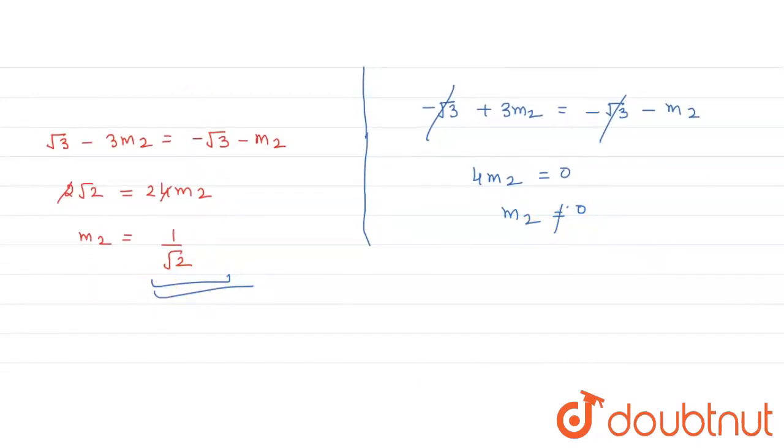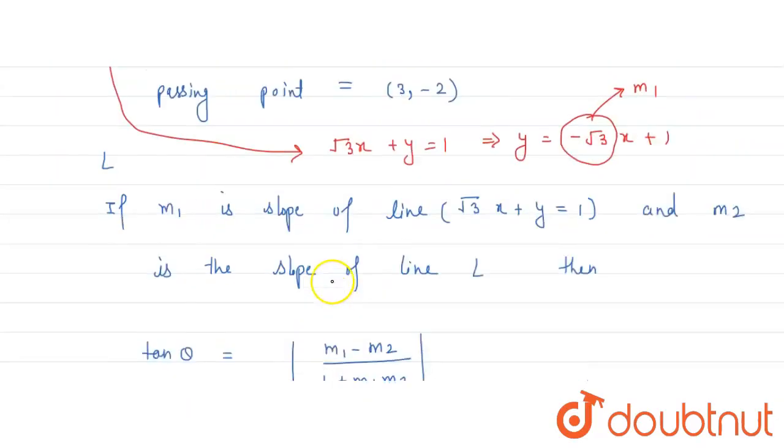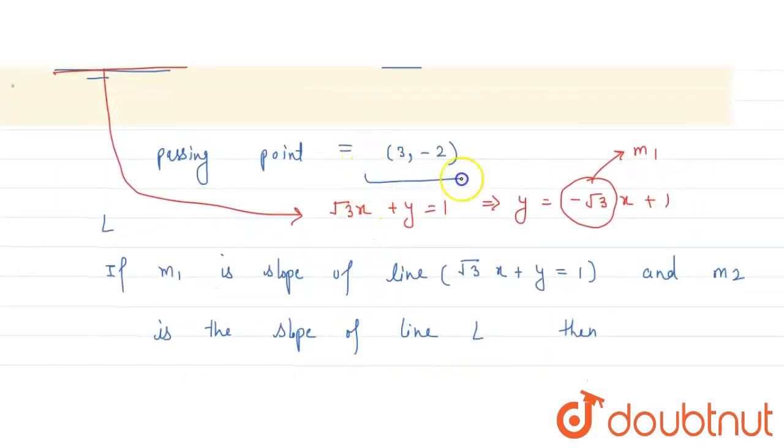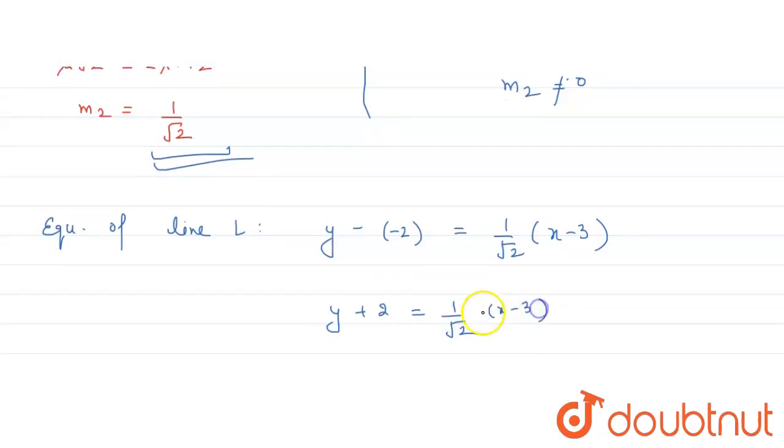Now we know the passing point. So equation of line L becomes y minus, what is the passing point? 3, minus 2. So y minus 2 equals the slope 1 upon root 2, x minus 3.